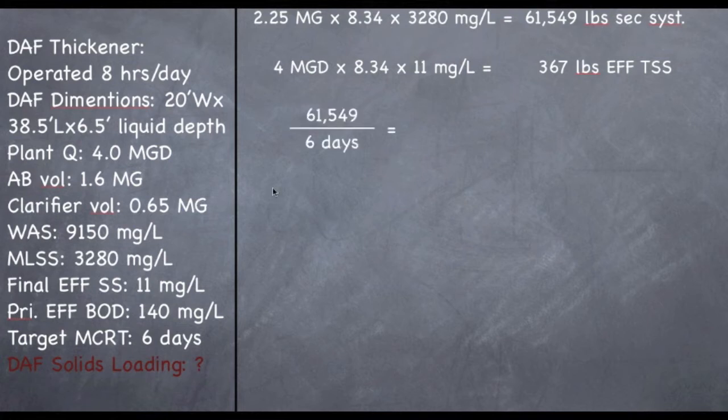The next step is we are going to divide how many pounds are in the secondary system, divided by our target MCRT, which is 6 days, and that gives us 10,258 pounds. Next step, subtract how much is leaving, 367 pounds of TSS, which will give us a new concentration of 9,891 pounds that we need to get rid of to meet this target MCRT of 6 days consistently.